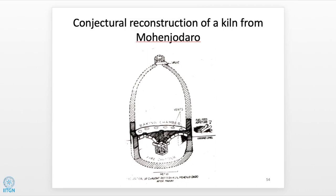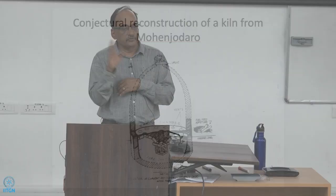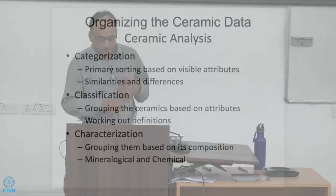This is an archaeological example — a conjectural reconstruction from Mohenjo-daro. It has two chambers: a baking chamber on top and a fire chamber below, separated by a perforated plate, with a fuel-feeding aperture and a valve on top. When the valve is closed, oxygen supply reduces and carbon monoxide increases — a reducing atmosphere. When the valve is open, a continuous draft is maintained providing oxygen — an oxidizing atmosphere. Both oxidizing and reducing atmospheres can be created in this kiln.